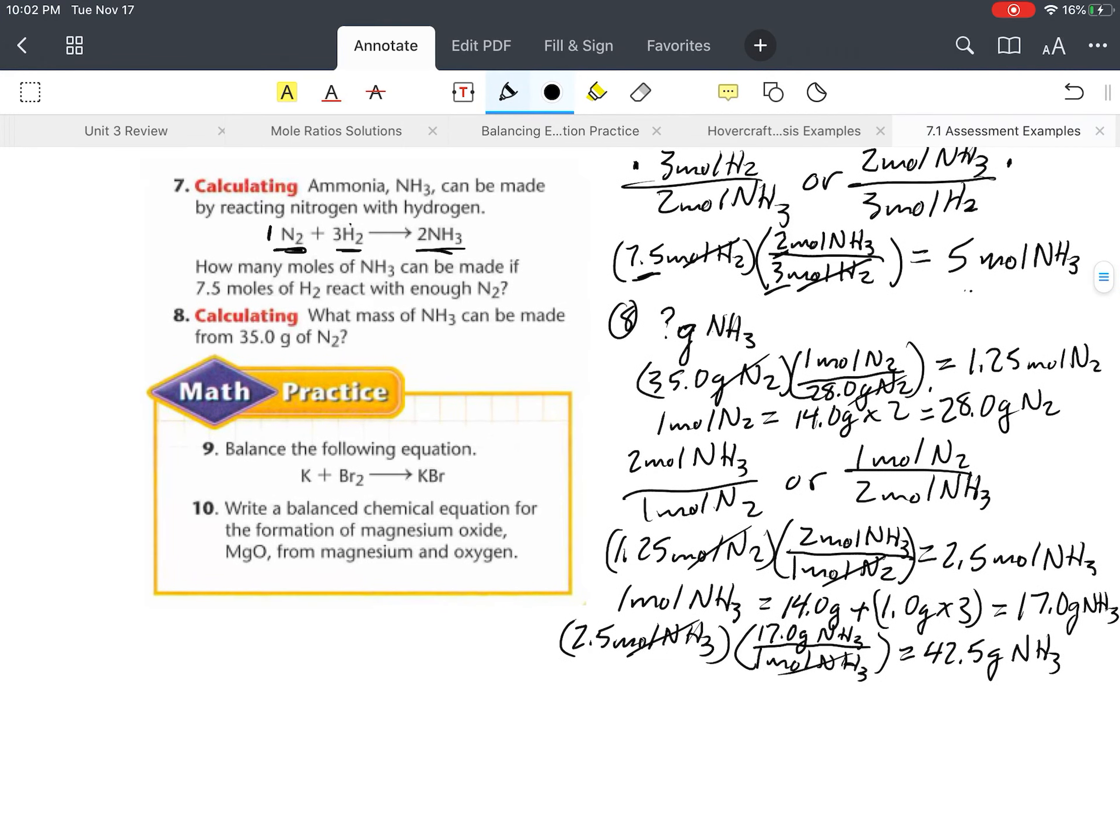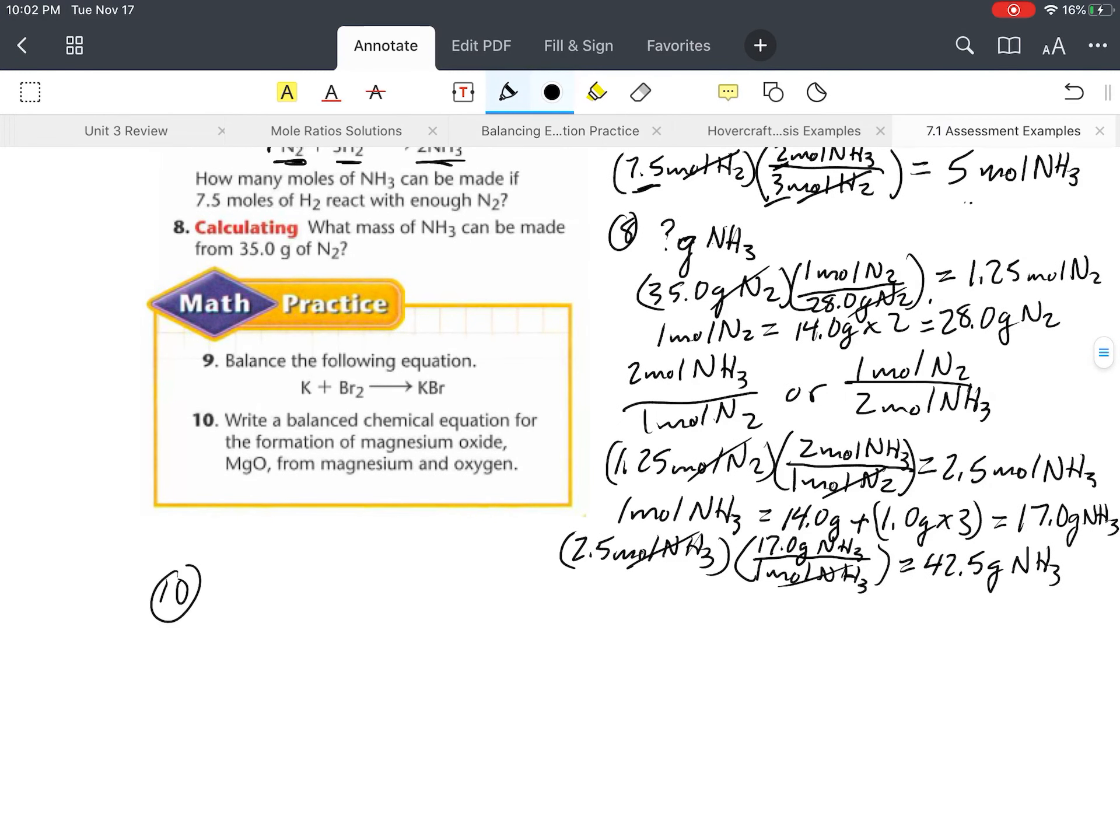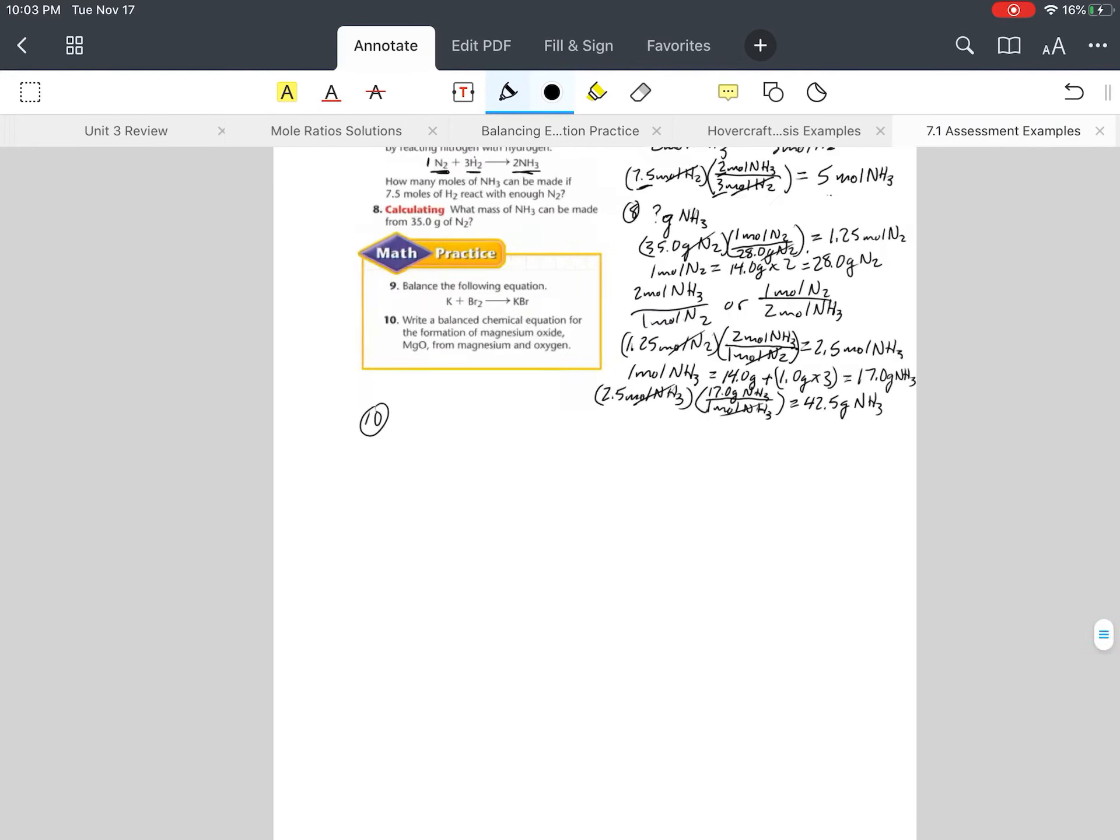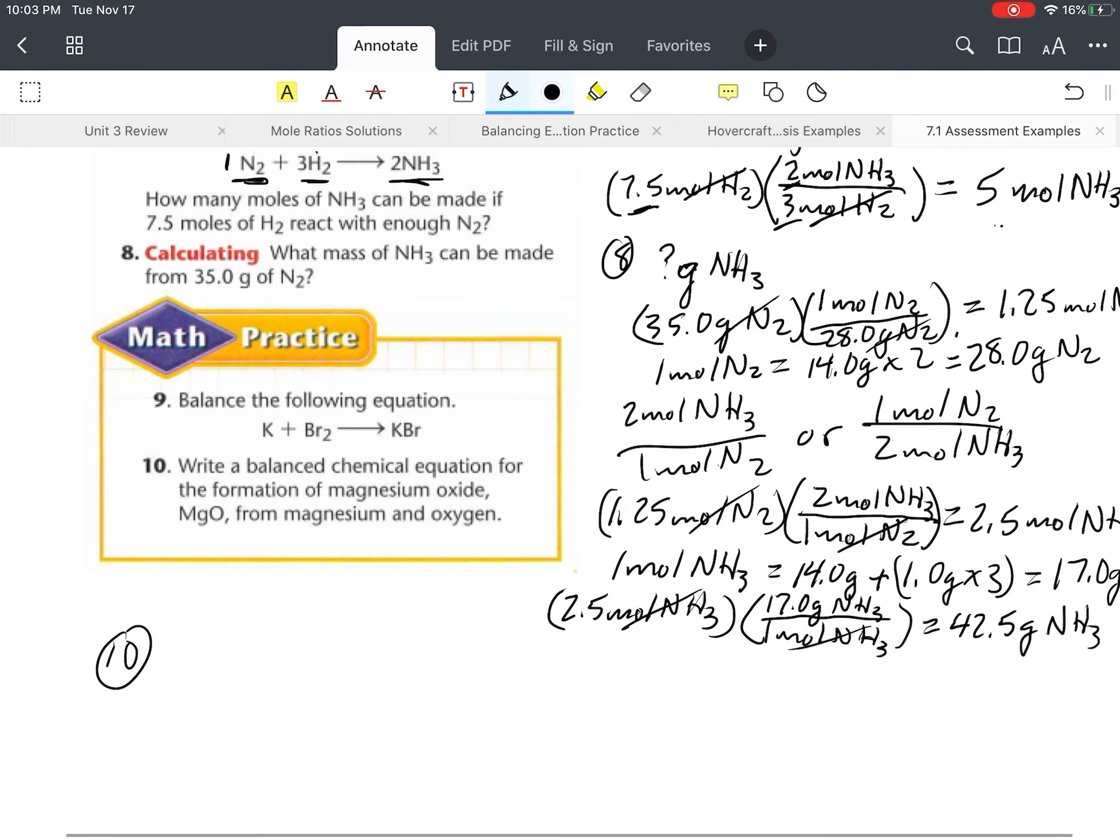All right, let's go on to the last problem here, number 10, which will be much quicker and easier than number 8. Number 10 is just, okay, how do we write a balanced equation from given information? I know this was troublesome for some, so I thought I would show it again. So we have, in number 10, write a balanced chemical equation for the formation of magnesium oxide. So we're forming magnesium oxide, which means magnesium oxide is the product. So I write, I'm going to write my arrow here, MgO, because I'm forming MgO. How do I form it? I form it from magnesium and oxygen.